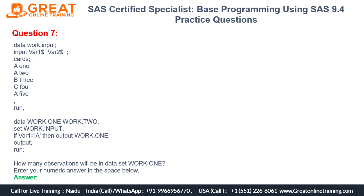Here we are writing the OUTPUT statement twice. The question is mainly: how many observations will be in work.one? You will get a numeric answer — for example, if it's 20 observations, you enter '20'. So you need to figure out the exact count.